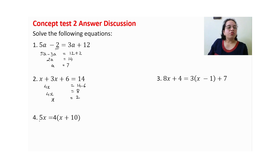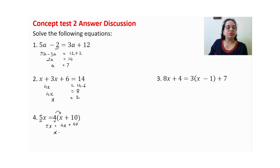Here 5 and 4 are not directly divisible, so we have to use the distributive property. So 5x is equal to 4x plus 40. Shifting x to one side: 5x minus 4x gives you x is equal to 40.